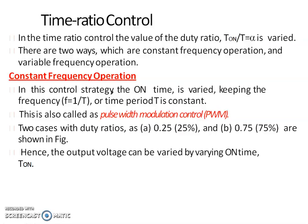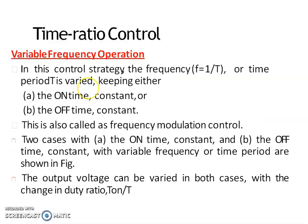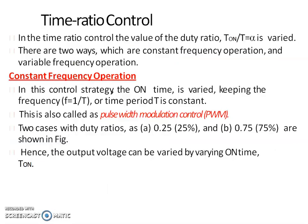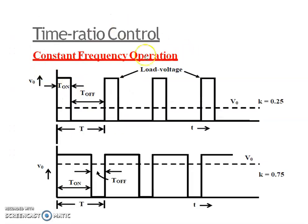There are two types of TRC control. The first one is constant frequency operation and the second one is variable frequency operation. In constant frequency control, the on time T_on is varied but the chopping frequency f is kept constant.